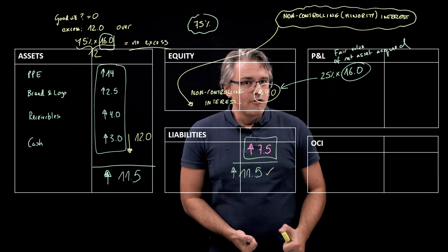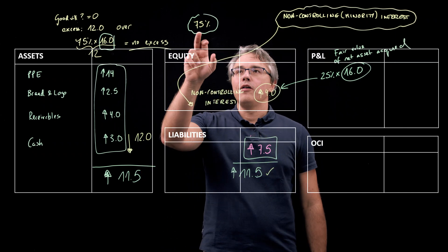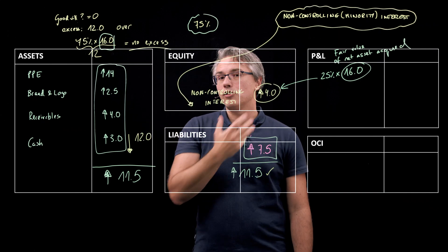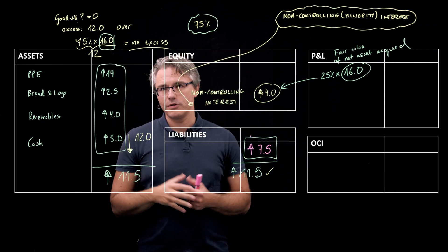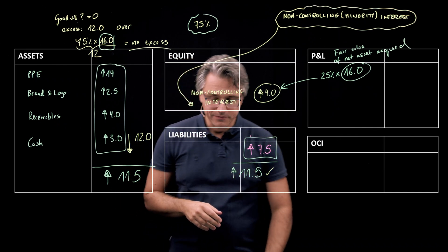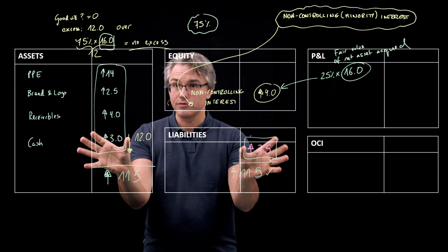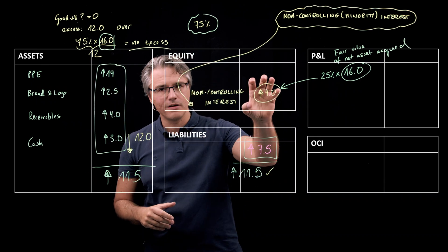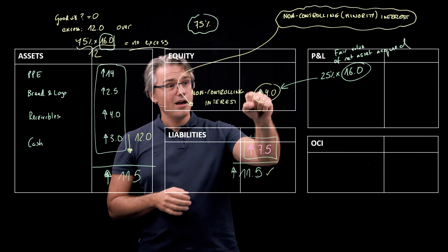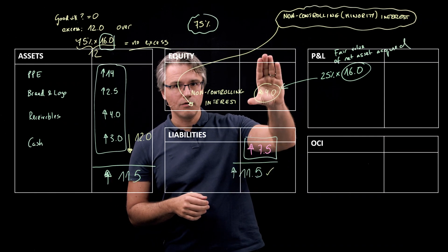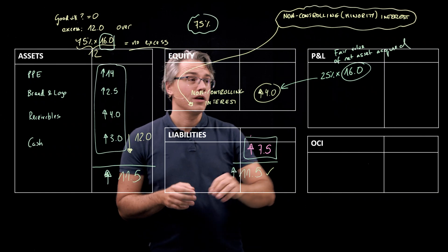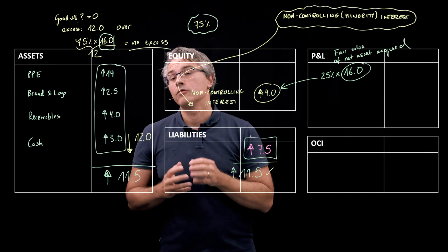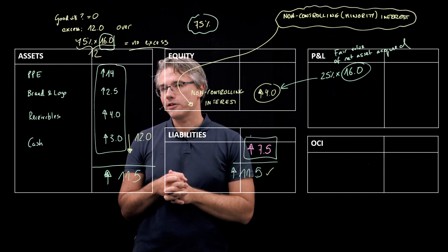Now, no matter if I own 75%, 60%, 55% or 80%, as long as I'm not a 100% shareholder, I'm still going to introduce the net assets in my consolidated balance sheet in full, but then this item, this compensating item, will either be bigger or smaller, depending on what proportion of these net assets those minority or non-controlling shareholders actually hold.